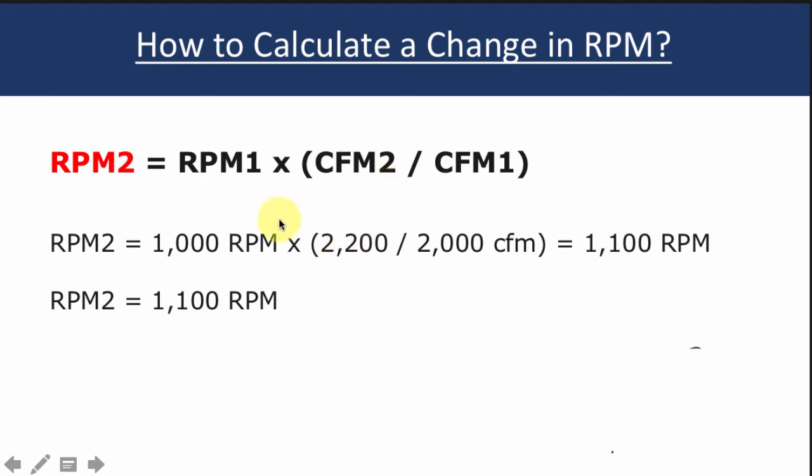So the good way to remember this is 2 is new, 1 is old. 2 is always the new number you're looking for. 1 is the old number or the existing number. It's a little mnemonic to help you remember what is new, the new number and what is the old number. So in this case, we had 1000 RPM existing, RPM1. CFM2 is the new CFM we're looking for. CFM1 is the old existing CFM. You just do that calculation and to get the CFM we want, we need to speed the fan up to 1100 RPM.